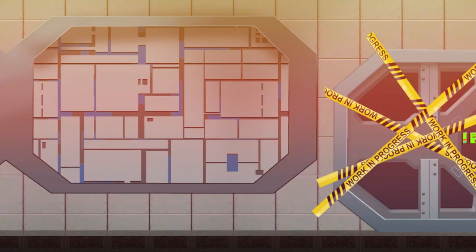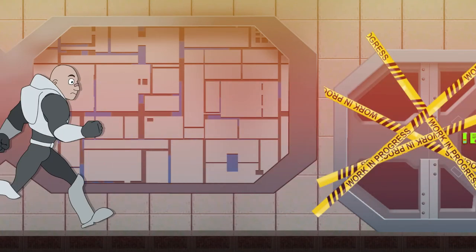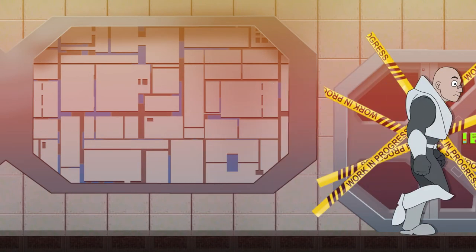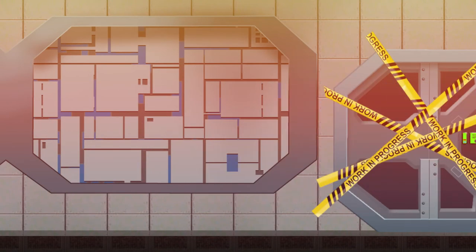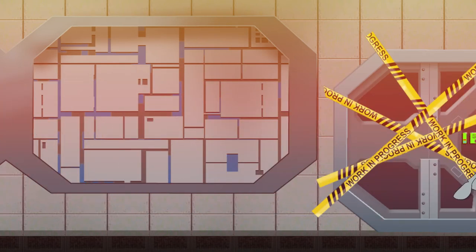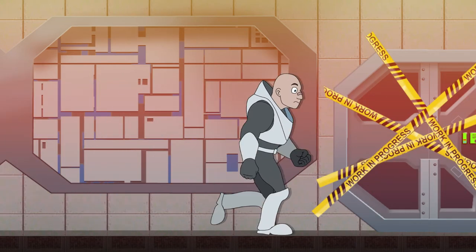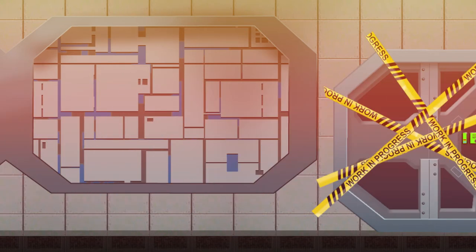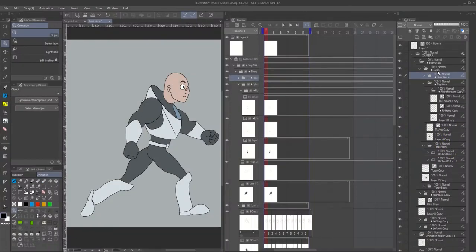Hi guys, it's Leonardo again with another puppet animation tutorial. In this tutorial I want to show you how to create a standard run cycle and how to make it move through a background.